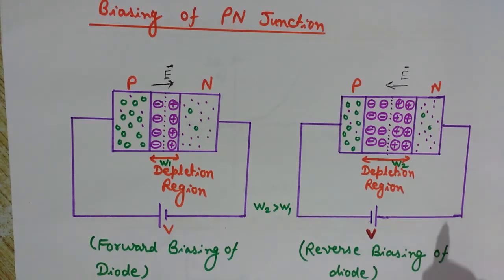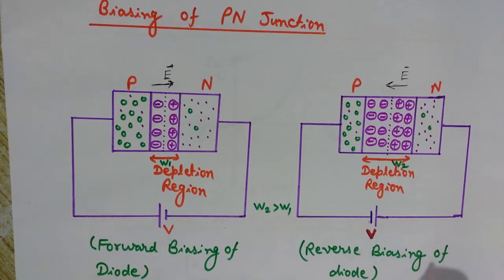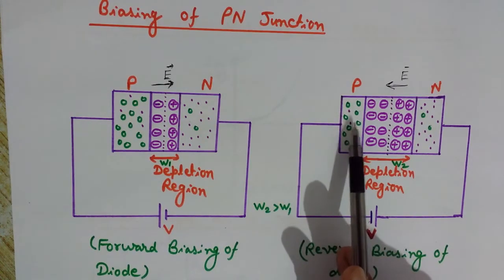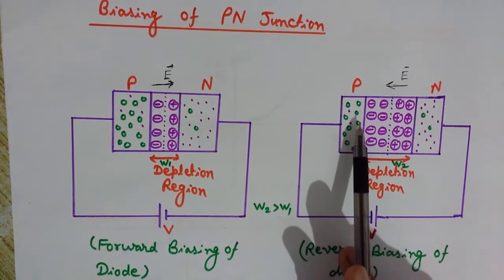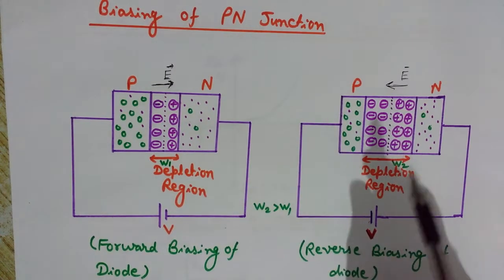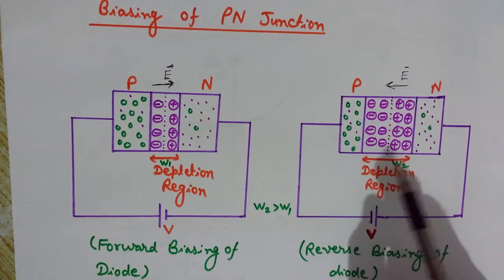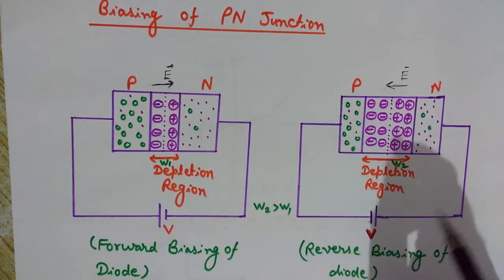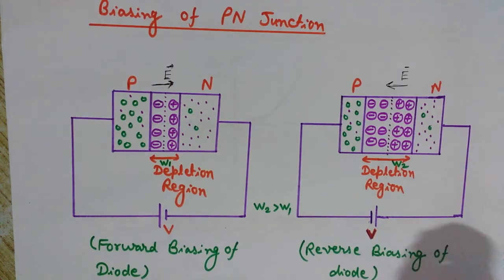Each atom added — either pentavalent or trivalent — adds one single charge carrier to the semiconductor. One pentavalent atom added to the N side gives us one electron, and one trivalent impurity added to the P side gives us one hole — a hole is nothing but the vacancy of an electron. When we keep increasing the doping level, the charge carriers increase, which reduces the breakdown voltage.